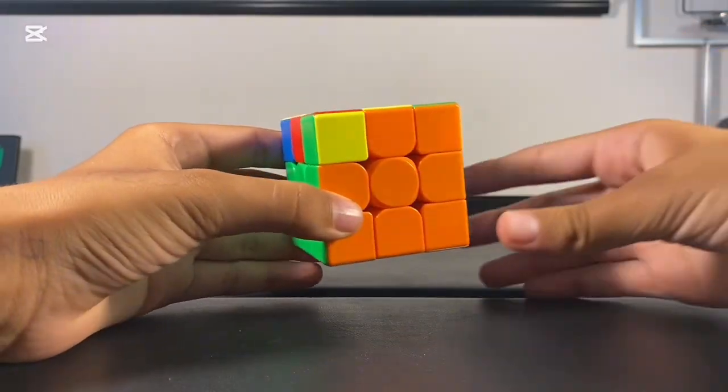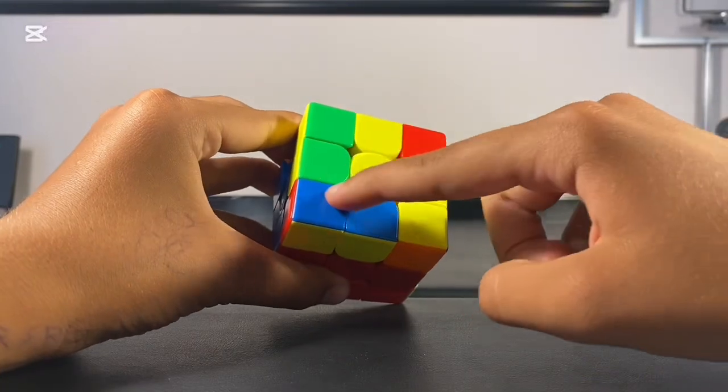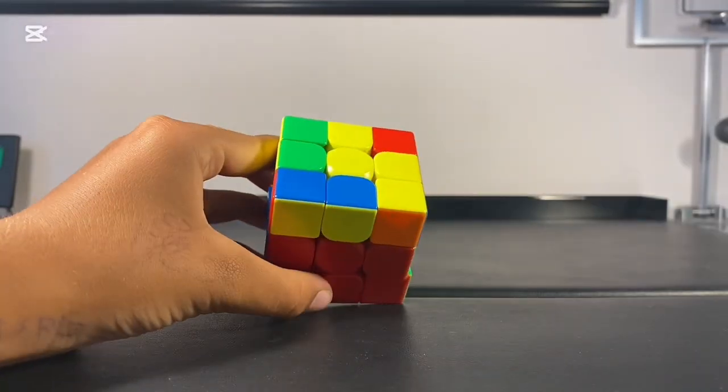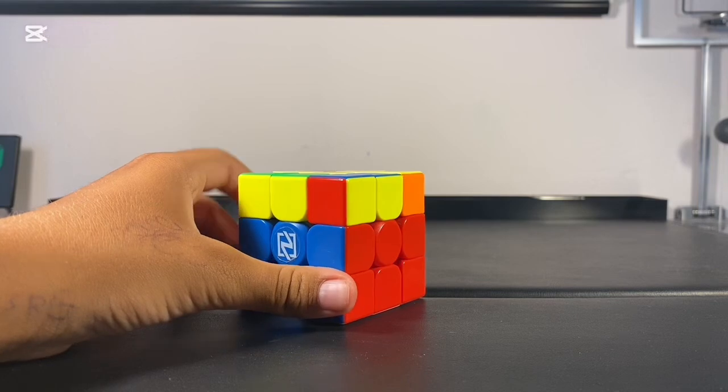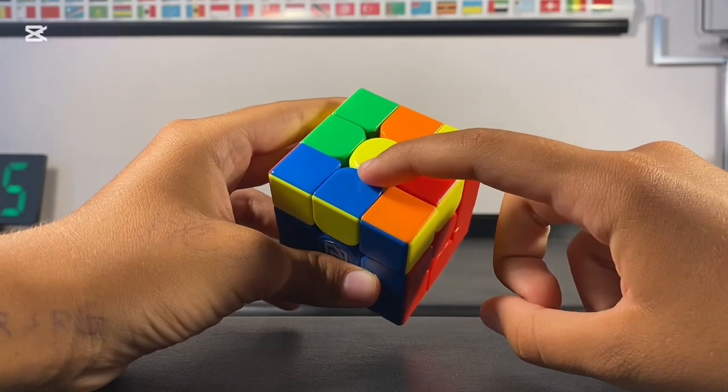The next step is orientation of last layer, which means to bring all the yellow stickers on the top layer. We are going to use a 2-look OLL. First, you have to do the yellow cross. There are four cases to that.